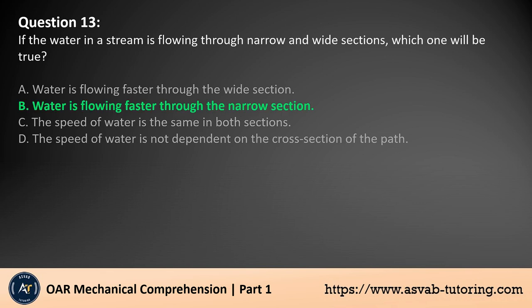The answer is B. According to the principle of continuity in fluid dynamics, the flow rate, or discharge, of a fluid must remain constant throughout a pipe or stream. Therefore, if the cross-sectional area of the stream narrows, the speed of the water must increase to maintain the same flow rate.